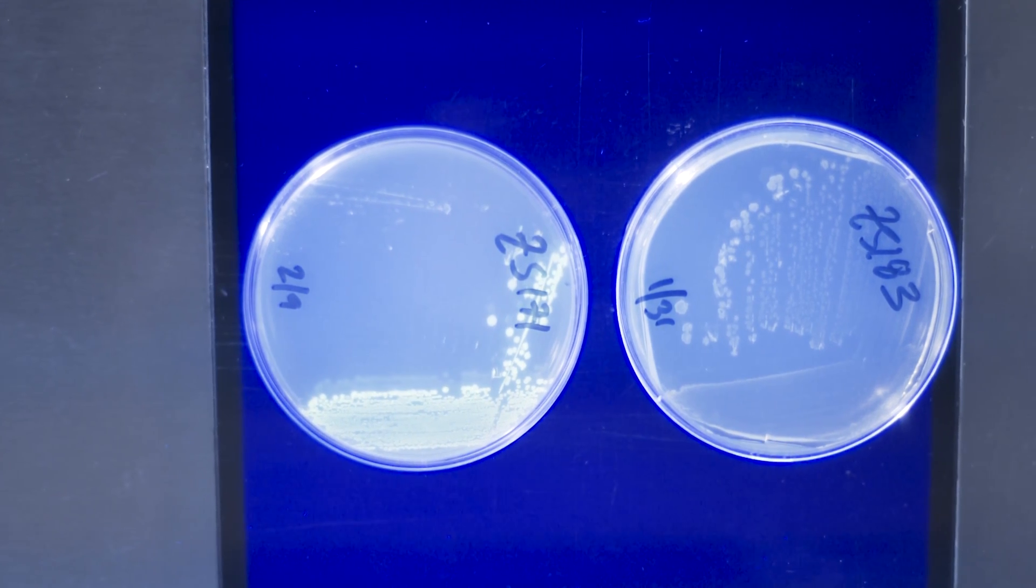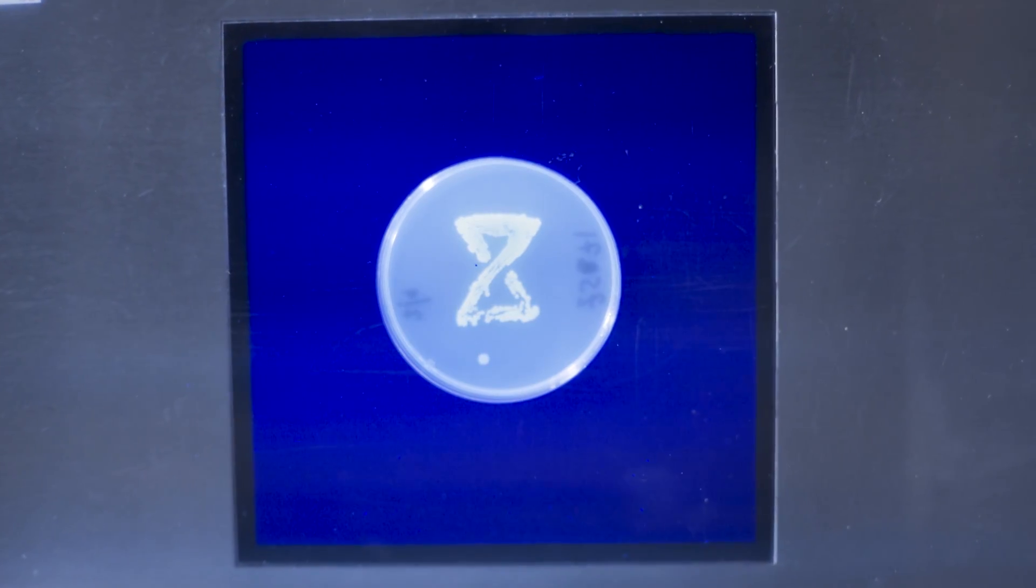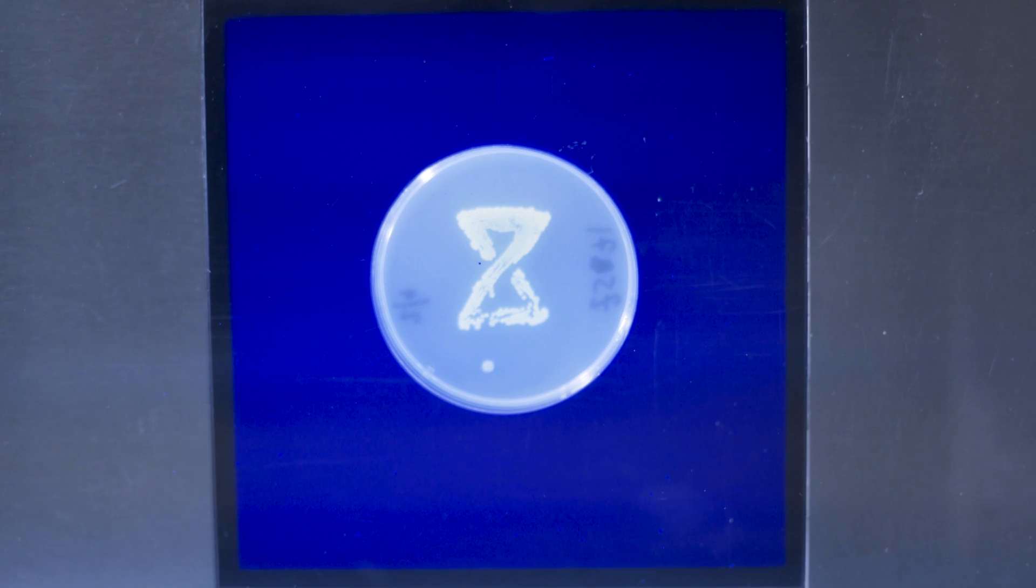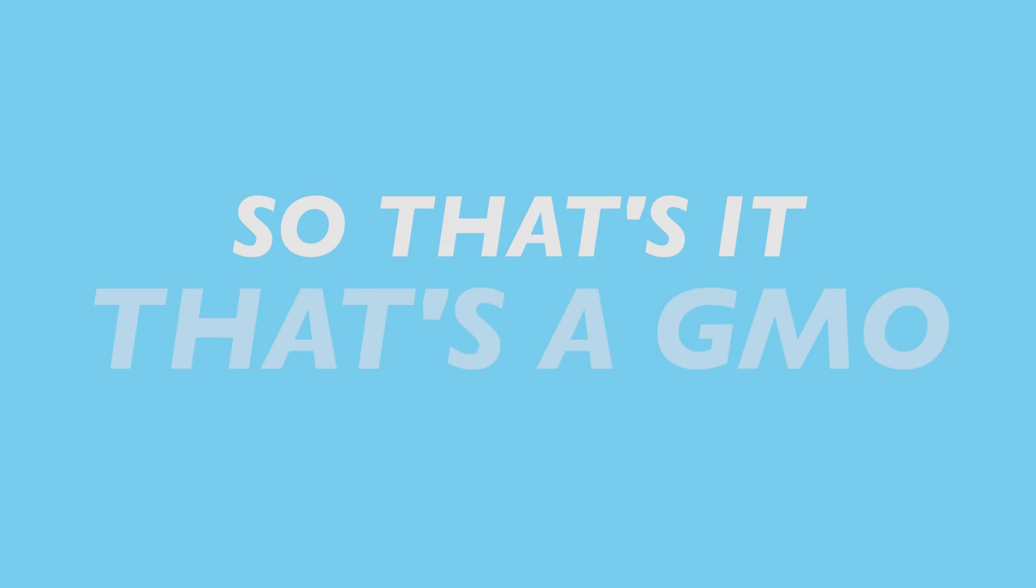At this point, you've got a genetic engineering technique that's really useful. You can use it to design and test different protein expression strategies. And once you've got a strategy you like, you can try slotting in proteins that do different things. So that's it. That's a GMO.